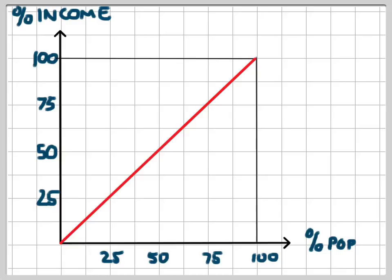And in an economy that did have a perfectly even distribution of income, this would be the Lorenz curve for that economy.